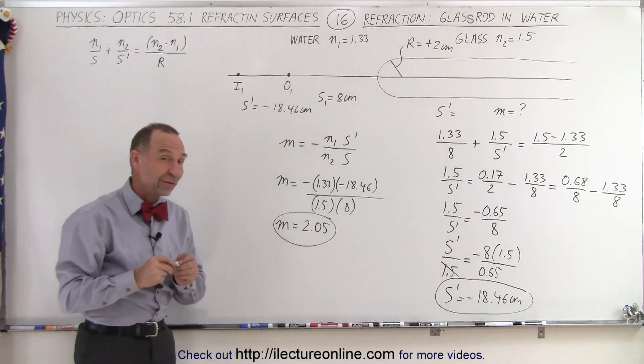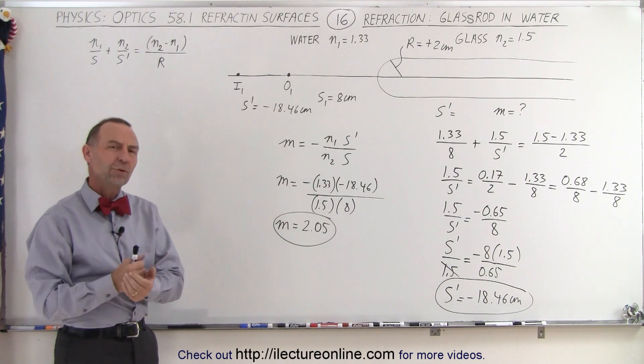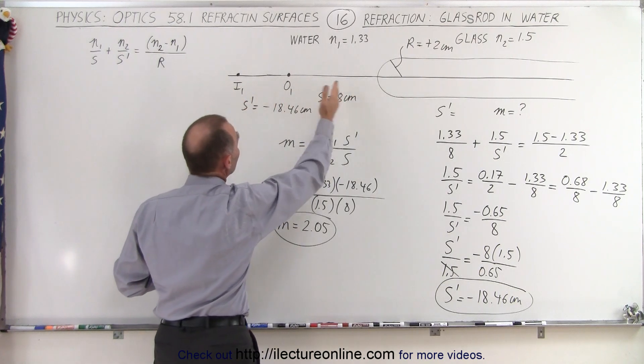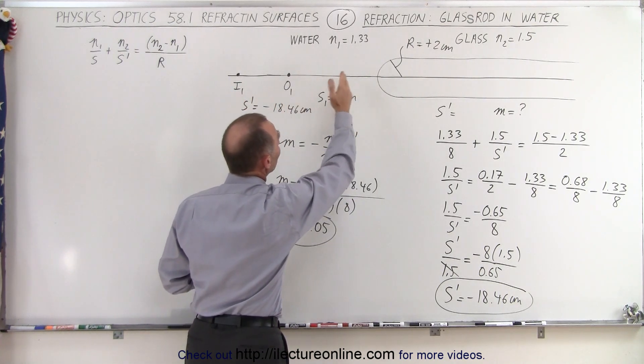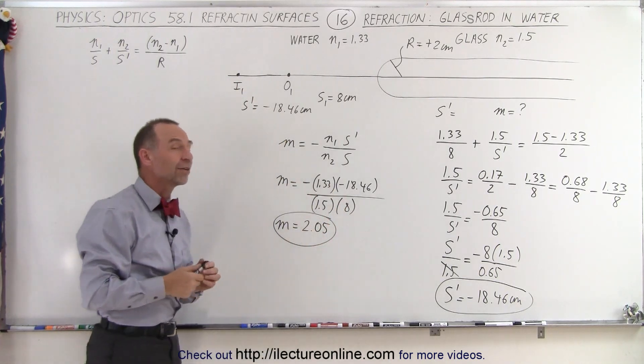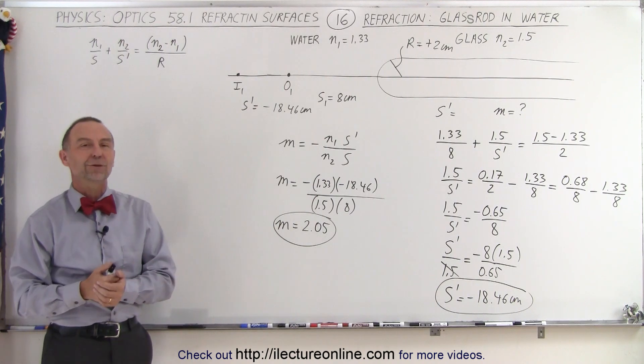And so that's what happens when we place the rod in water. I think what we should do is do one more example where we put the object in different locations to see how that makes a difference. We'll put it really close to the boundary, farther away from the boundary, and see if that makes any difference to the ultimate outcome. So stay tuned and we'll show you how to do that.